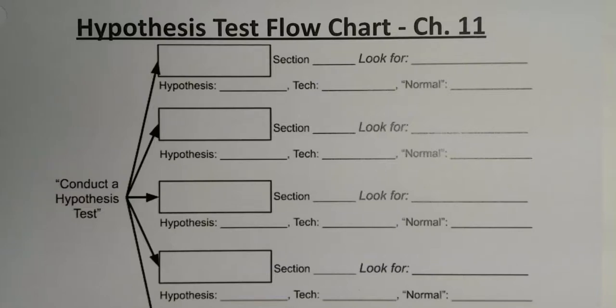Now on to our last flowchart in chapter 11, which is the hypothesis test flowchart. We've learned a lot of different hypothesis tests so far — five different ones, just like we've learned five different sample size formulas and five different confidence interval formulas. We've learned five different hypothesis tests, and now we've got to keep them all straight.